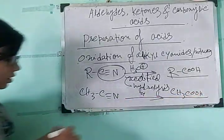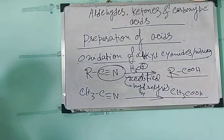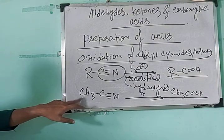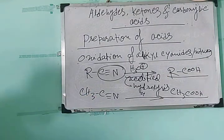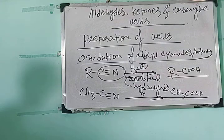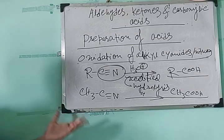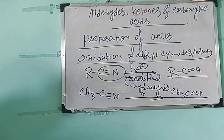So this is another method for the preparation of acids. And if you take benzonitrile (PhCN), then you will get benzoic acid. So you can convert to benzoic acid either by taking alkyl benzene or by doing the acidified hydrolysis of benzonitrile.